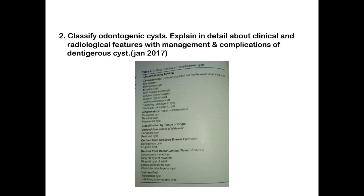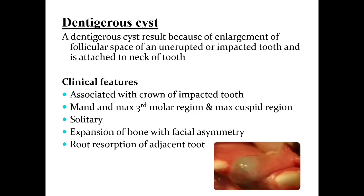The second part of the question asks to explain in detail the clinical and radiological features with management and complications of the dentigerous cyst. The dentigerous cyst is a cyst arising from enlargement of the follicular space of an unerupted or impacted tooth, attached to the tooth neck and surrounding the crown of the impacted tooth. It is most commonly seen in the mandibular and maxillary third molars and the maxillary cuspid region, presenting as a solitary expansive lesion with facial asymmetry.